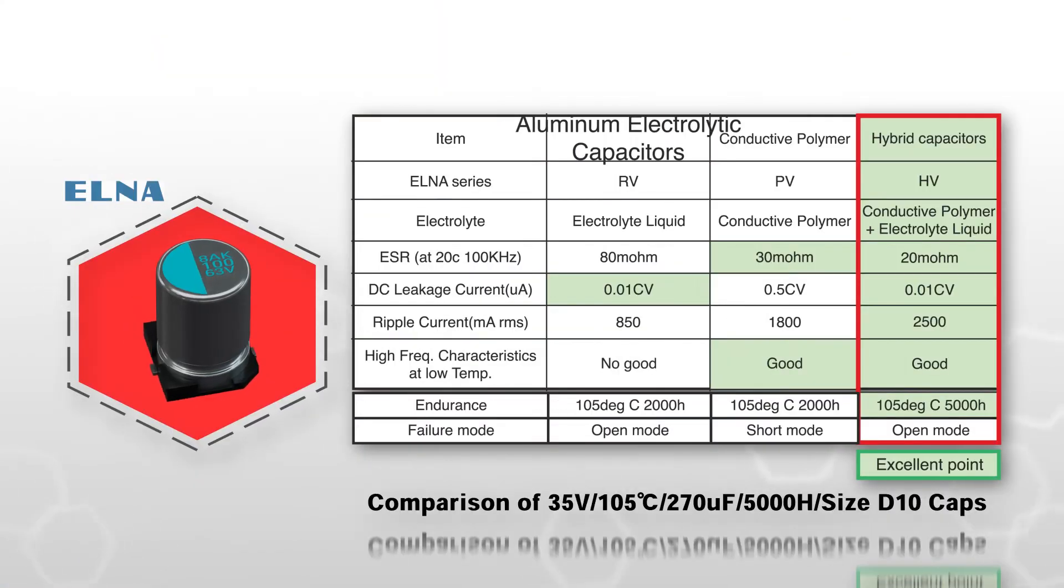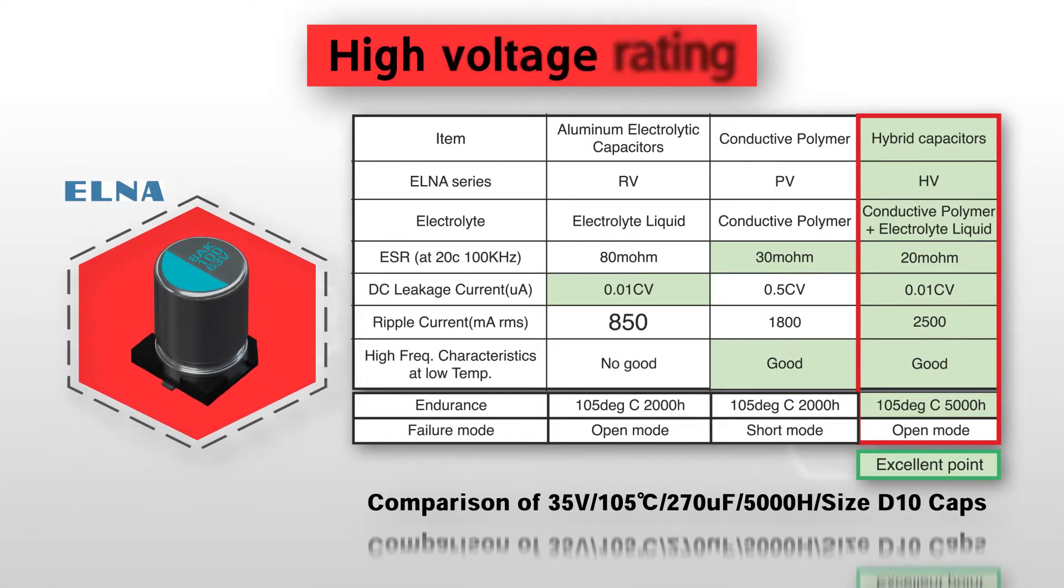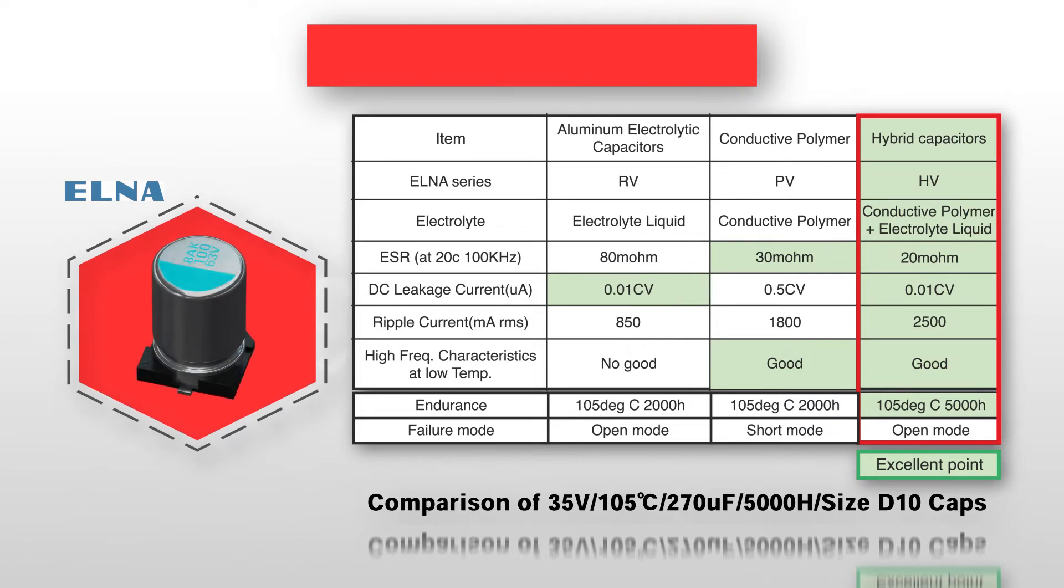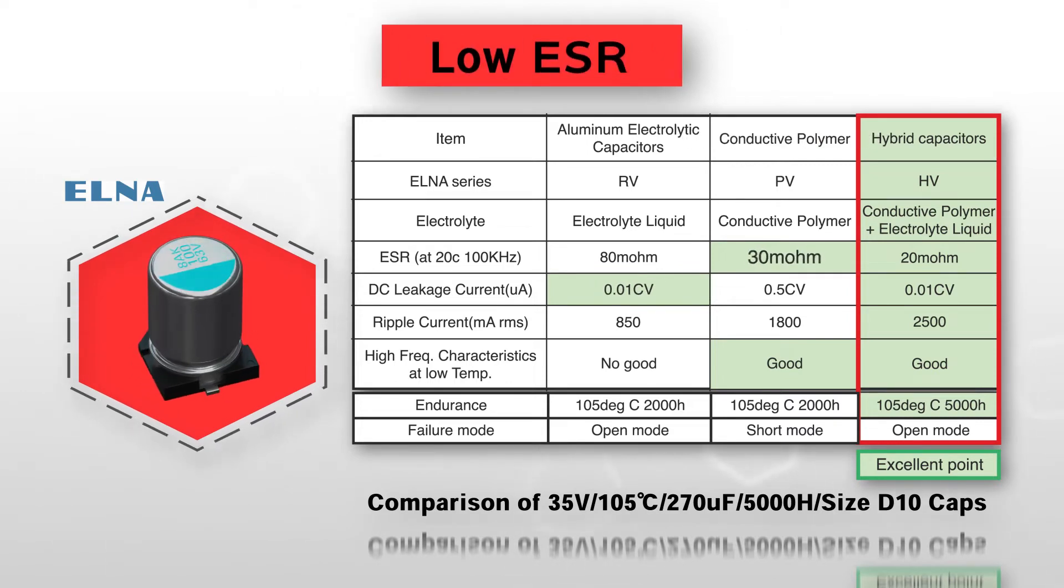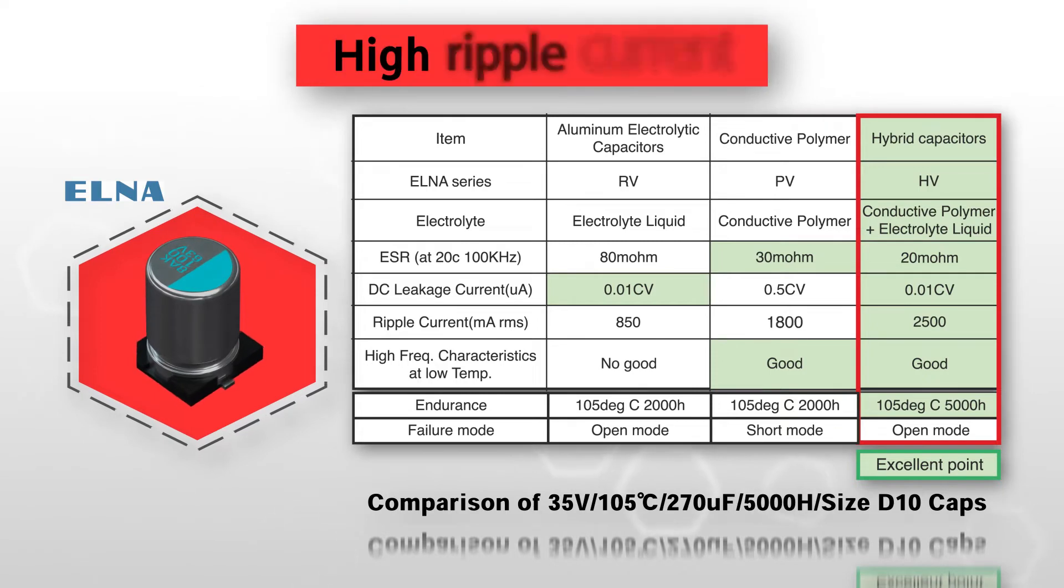The aluminum electrolytic capacitor, for instance, provides a high voltage rating and low leakage current, while the polymer capacitor exhibits a low ESR, stability over temperature, and a high ripple current rating.